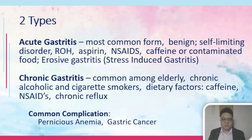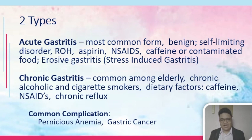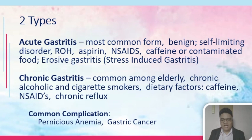There are two types of gastritis: acute and chronic. For acute gastritis, it is the most common form — between the two, acute gastritis is more common. It is benign and self-remitting, meaning it can heal on its own as long as the offending substances are stopped — such as alcohol, aspirin, NSAIDs, caffeine, or contaminated food.